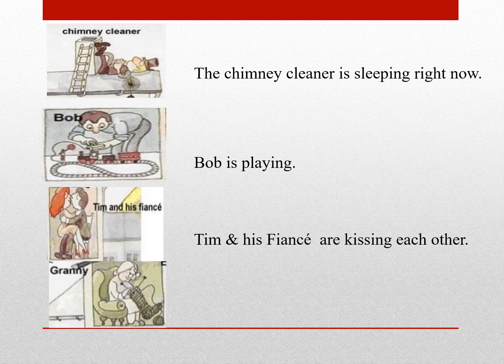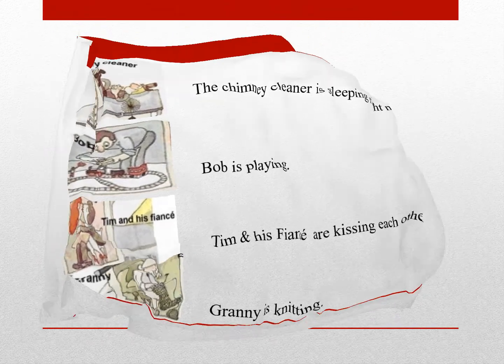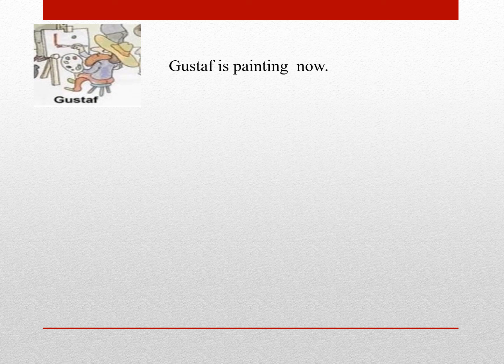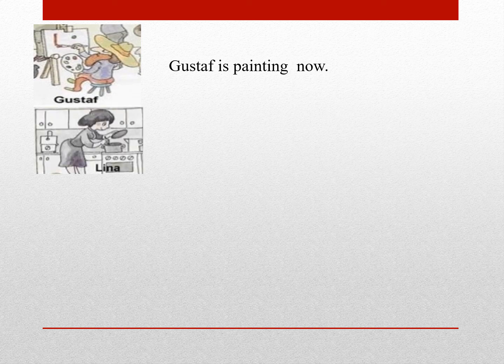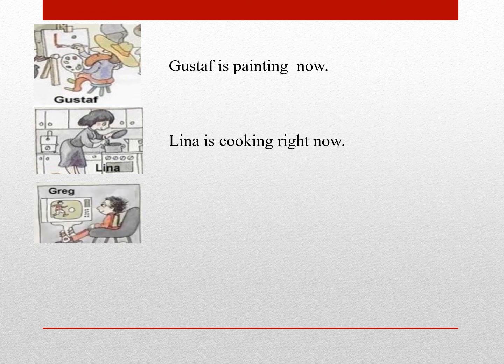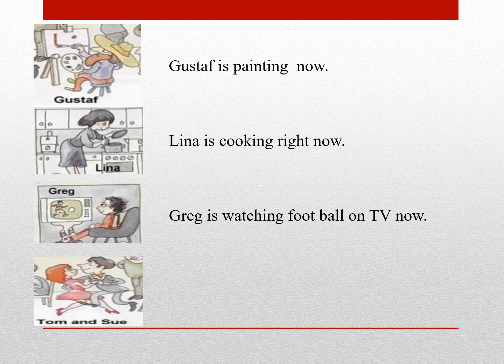What is Granny doing؟ Granny is knitting. در واقع مادربزرگ داره بافتنی انجام میده. What is Gustav doing؟ Gustav is painting now. What is Lina doing؟ Lina is cooking right now. What is Greg doing؟ Greg is watching football on TV now. What are Tom and Sue doing؟ Tom and Sue are dancing at the moment.